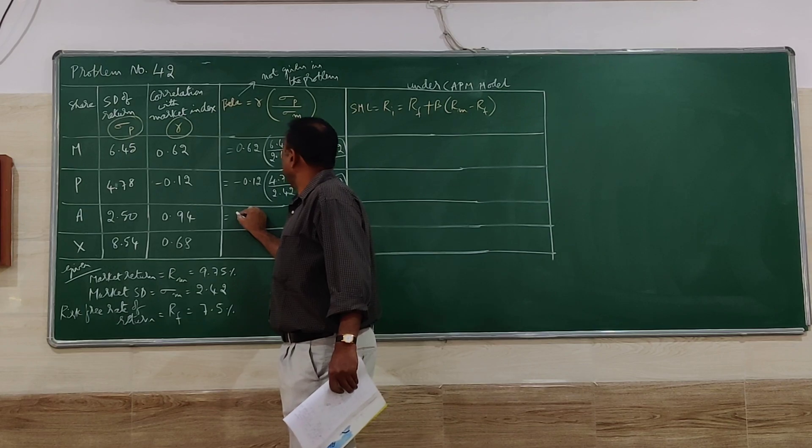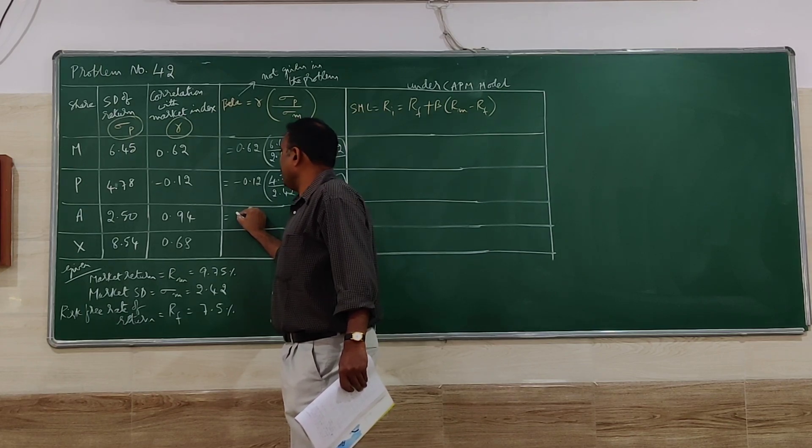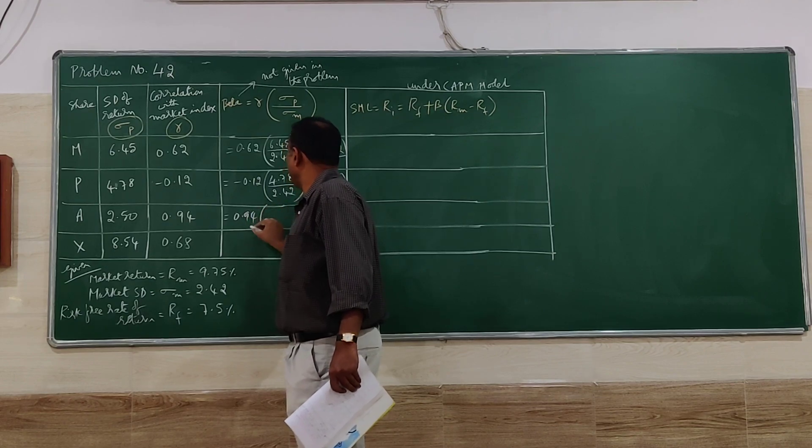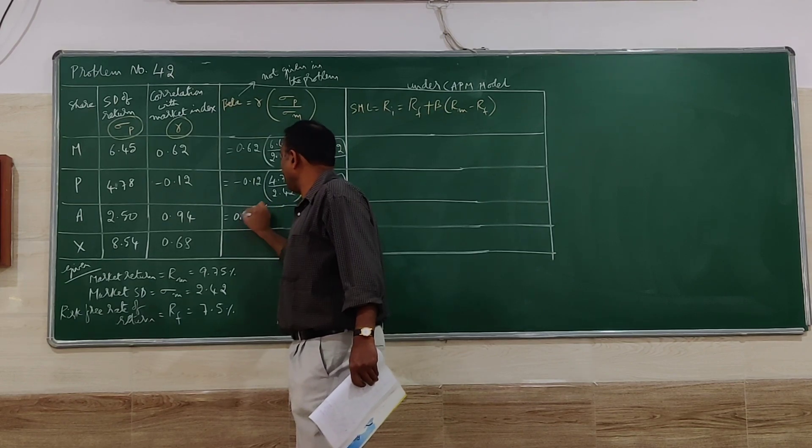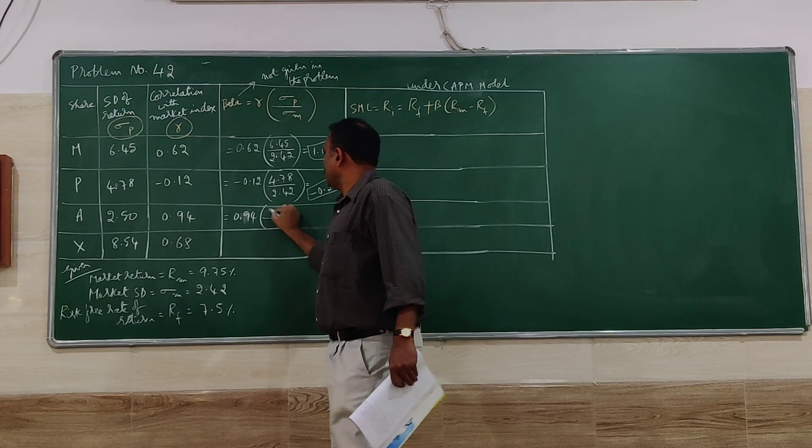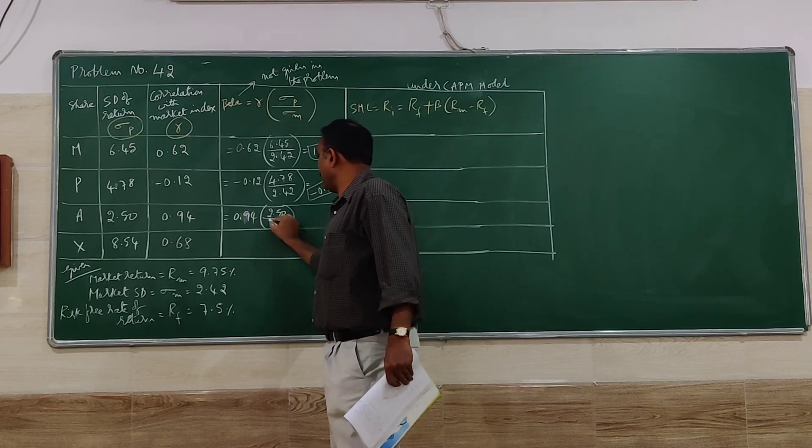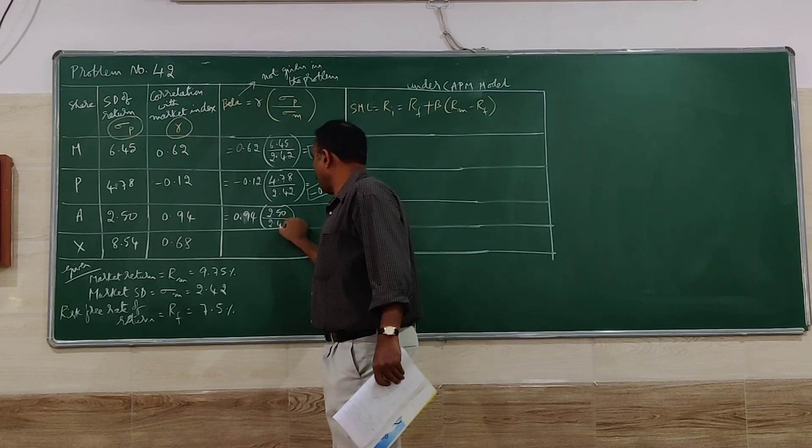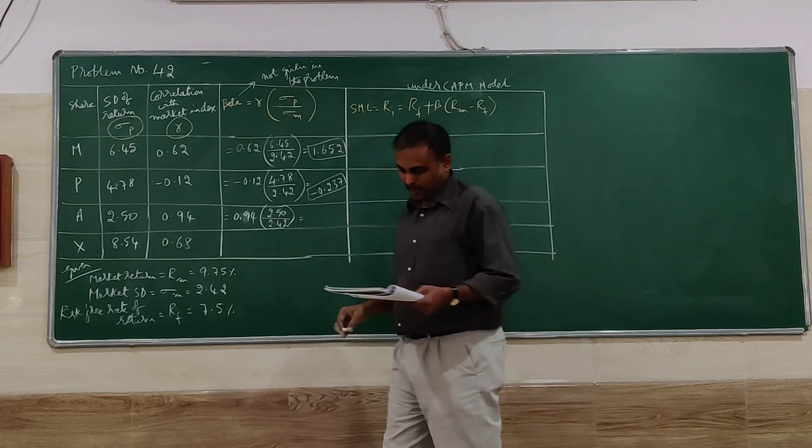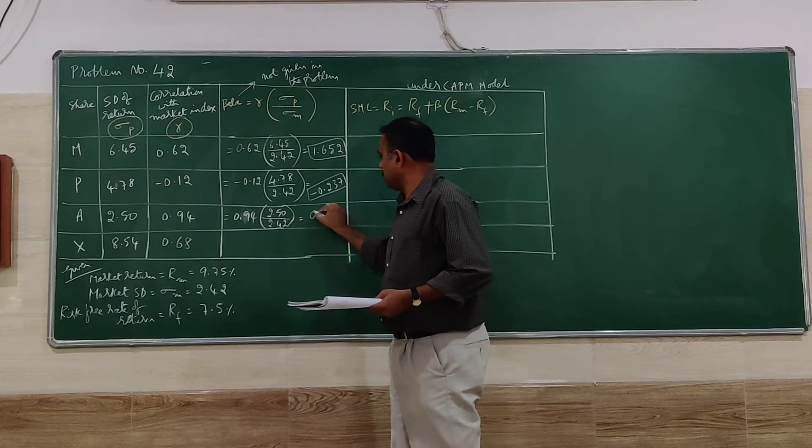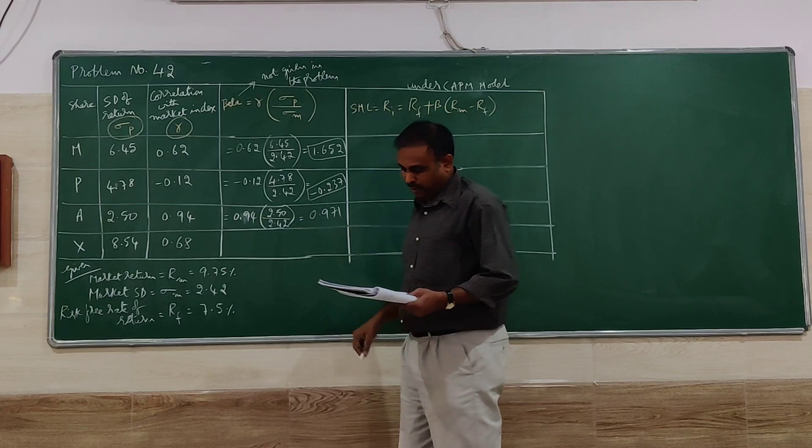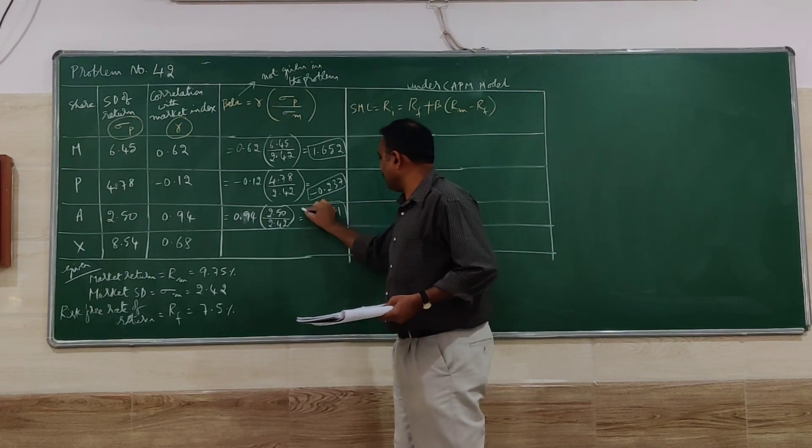Next for security A, 0.74 times 0.94 into 2.50 divided by 2.42. We get here 0.971 as the beta value.